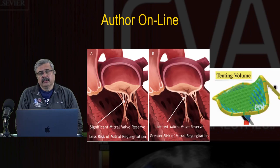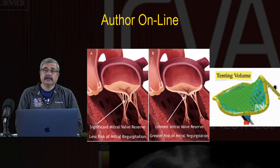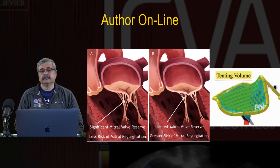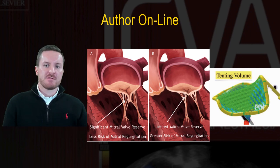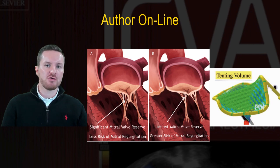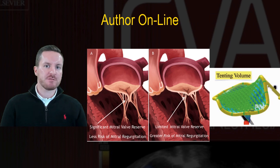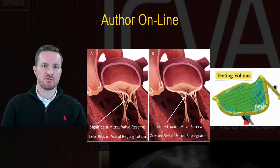What is the clinical significance of this study, and are there future implications of the finding relating reduction of coaptation zone to tenting volume? The clinical significance lies in identifying valves at risk for future mitral regurgitation. Just because a valve is non-regurgitant and non-stenotic does not imply normal valve function. All valves are at varying degrees of risk for developing mitral regurgitation. However, those with increased tenting volume or reduced coaptation area are at significantly increased risk.